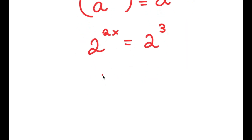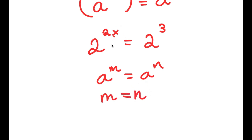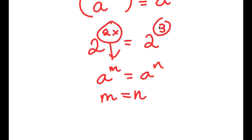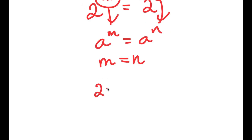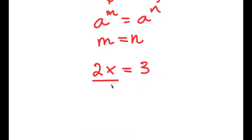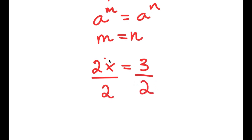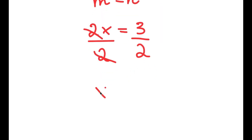Now, if I have a to the power of m equal to a to the power of n, this means m equals n. So in this case, 2x equals 3. This is a simple equation — I divide both sides by 2, the twos cancel, and I get x is equal to 3 over 2.